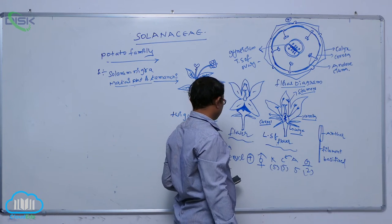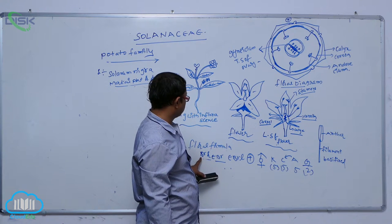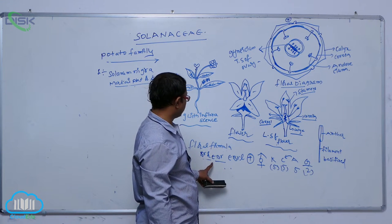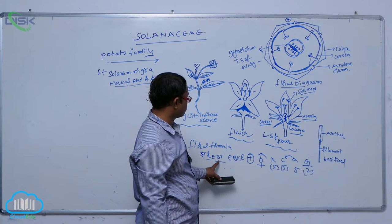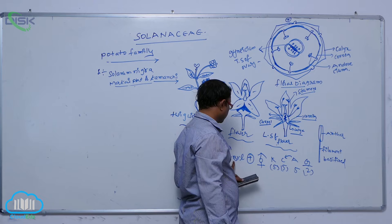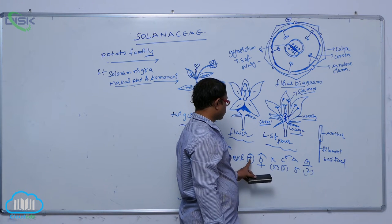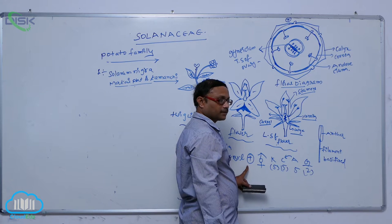After that floral formula, bracts are present, bracts. Ebr means ebracteate. Bracts are present or absent. Bracteoles, ebracteolate. Ebr means ebracteolate. So bracteoles are absent. Next one, that is known as the actinomorphic flower.